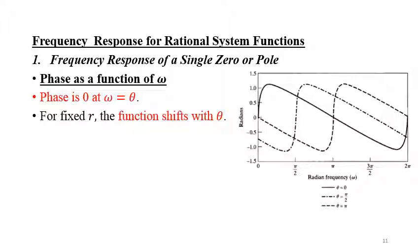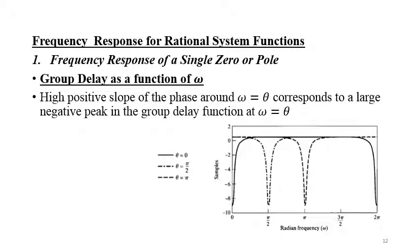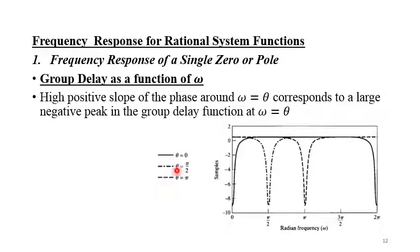The third parameter is group delay as a function of ω. There is a high slope of the phase around ω = θ, which corresponds to a large negative peak in the group delay function at ω = θ. We consider three different values of θ: 0, π/2, and π.